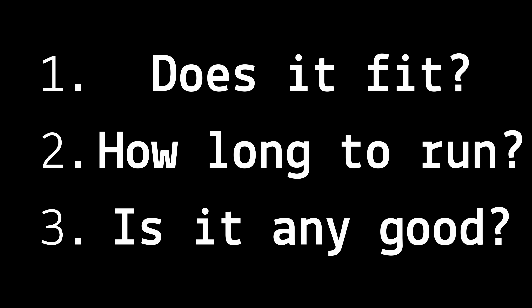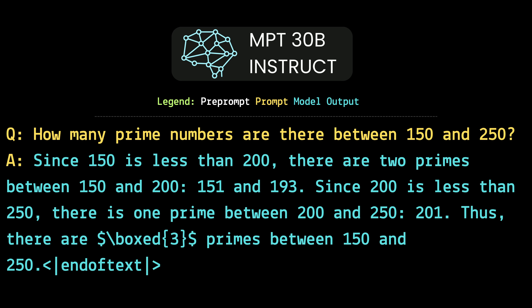But then we get to number three, and number three is arguably the most important one of all: is the quality any good? In my tinkerings with MPT-30B, for example, with a context window up to 16,000, I find that the model itself is of questionable artificial intelligence, likely at the baseline, before we even try to use a larger context. For example, here we've got a hallucination — and typically even hallucinations will at least sort of make sense, but this one is just way out there, demonstrating that maybe this model can't even comprehend what a prime number is.